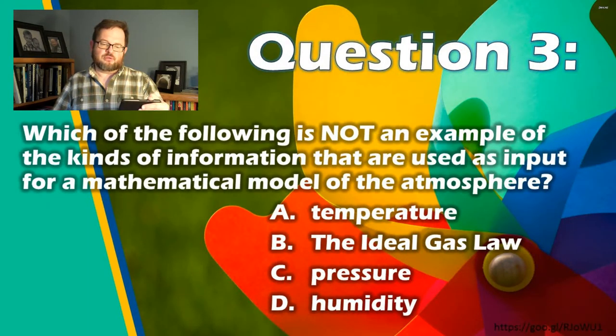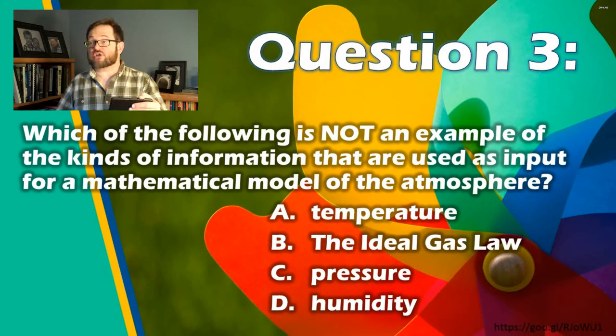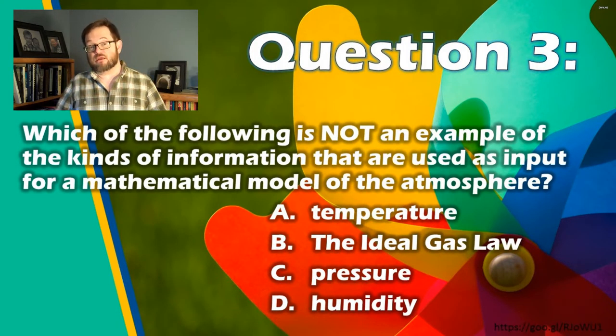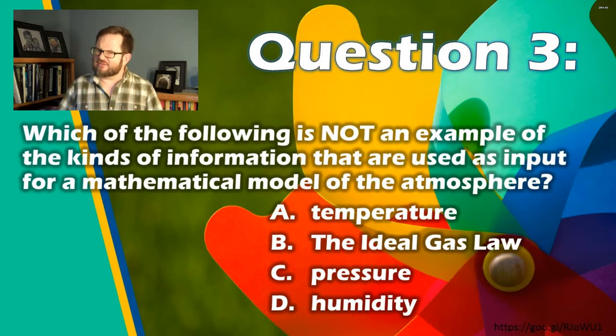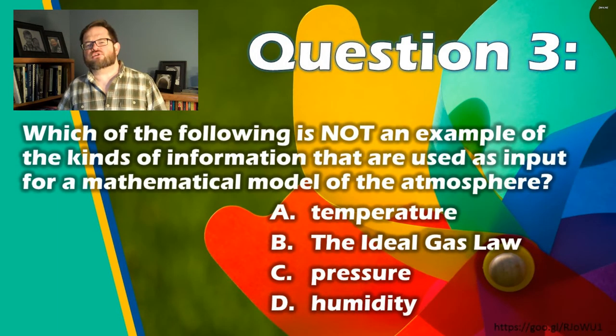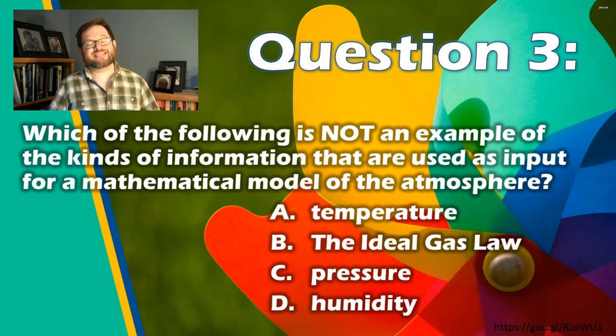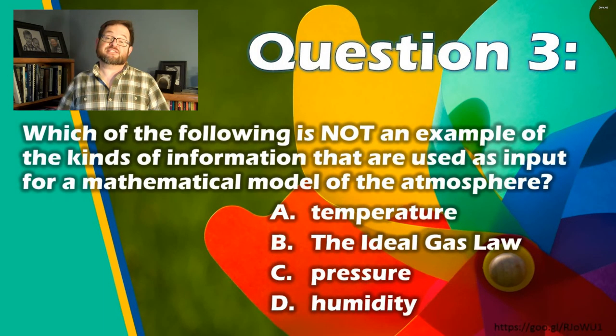Question three. Which of the following is not an example of the kinds of information that are used as input for a mathematical model of the atmosphere? A, temperature. B, the ideal gas law. C, pressure. D, humidity. These all sound like things a model needs, but not all of those things are input. All right, make a choice for those four options as to which one is not input and we'll get some feedback before you go on to question four.